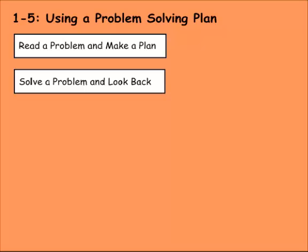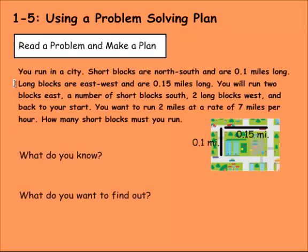Lesson 5 of Chapter 1 is using a problem-solving plan. This is an approach that we use to solve word problems and real-life problems. We're going to read a problem and make a plan to solve it, then solve that problem, and then look back and see if we got it right. So here's the first problem we're looking at.